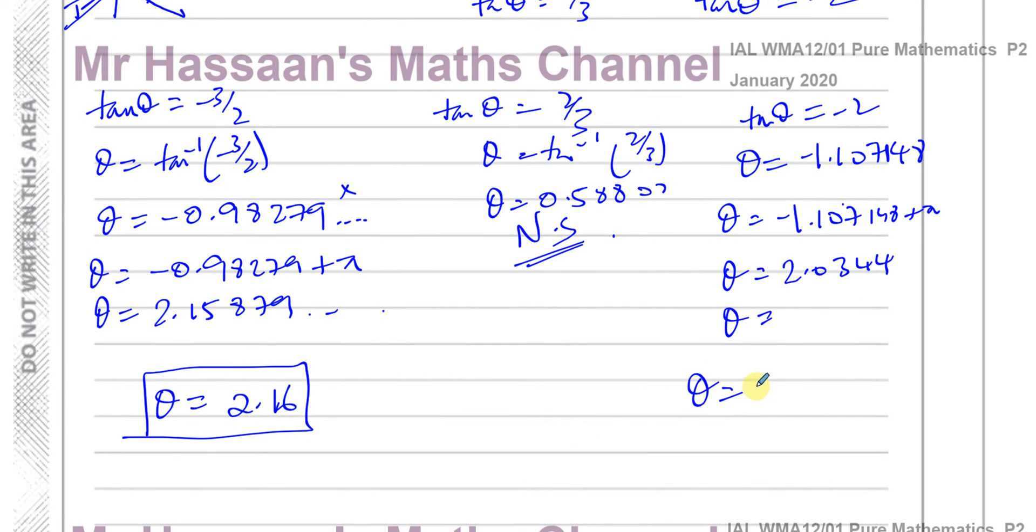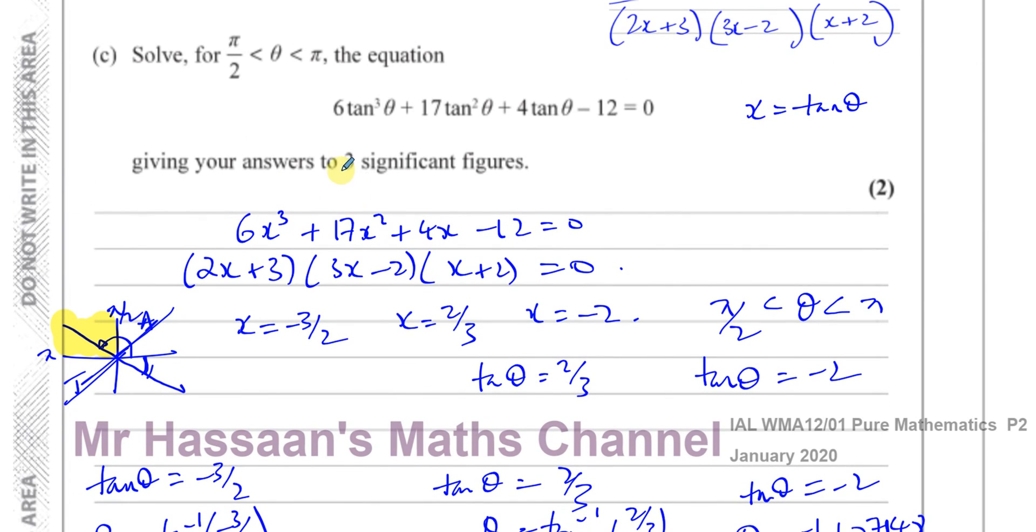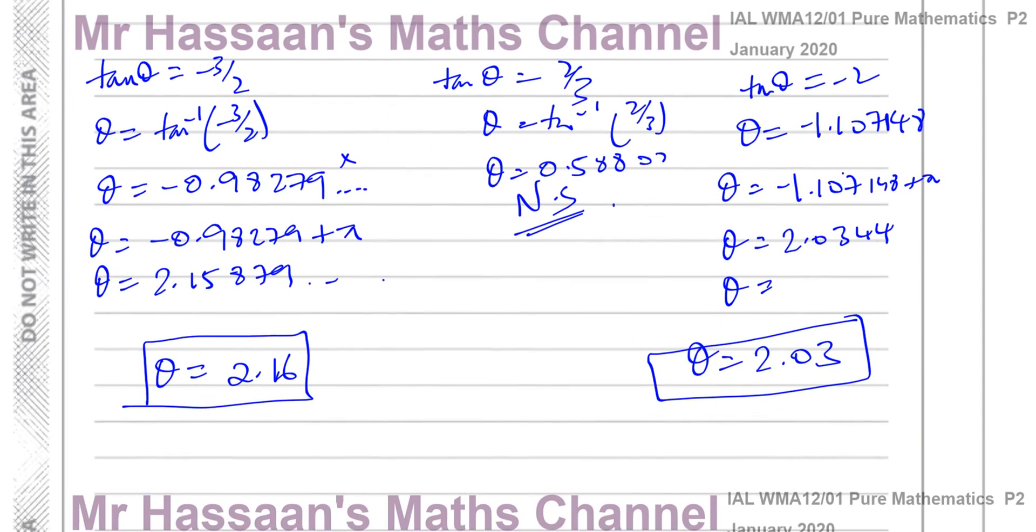We want to round in the end our answers to 3 significant figures, so we end up with theta equals 2.03. So this is 3 significant figures. Let's just make sure that's what they wanted—yes, 3 significant figures. That's how they wanted the answer to be expressed.